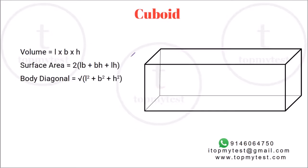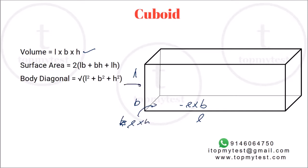If you have an irregularly shaped cube, that becomes a cuboid — the dimensions need not be the same. The longest dimension is length, then you have breadth and height. Volume is the base area L times B, times height. Surface area is the area of the six rectangles: bottom and top are L times B, front and back are L times H, and right and left are B times H — combined gives the total surface area. The body diagonal is square root of L squared plus B squared plus H squared, again provable with Pythagoras theorem.